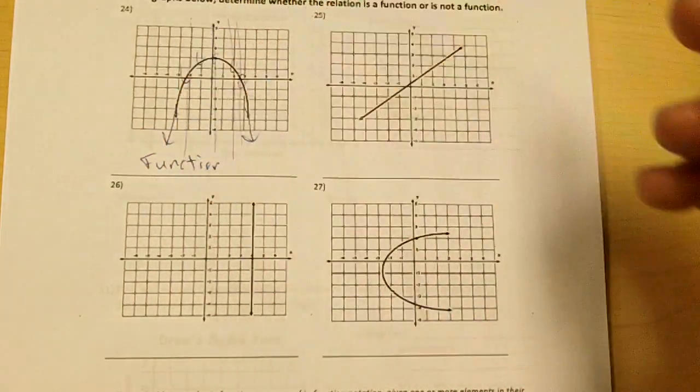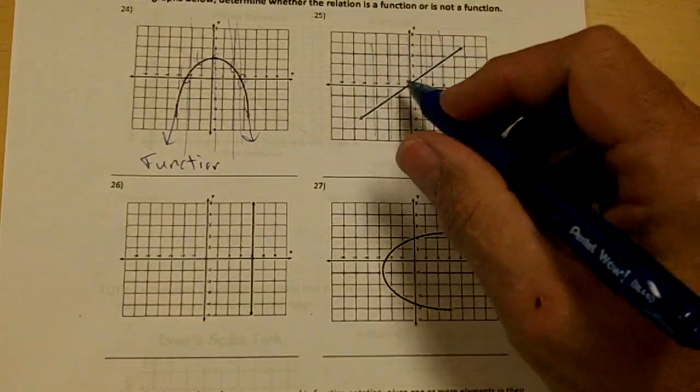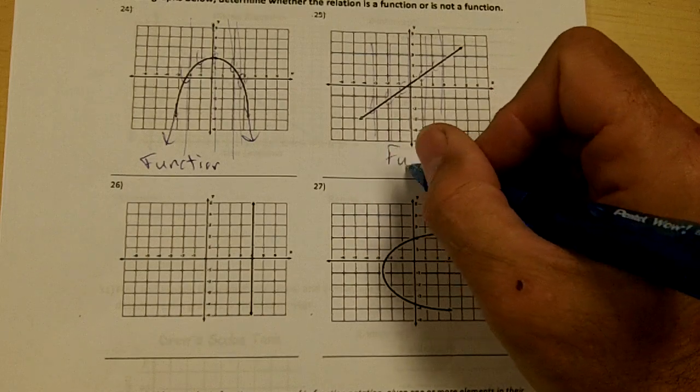If a vertical line crosses a graph twice, the x's repeat, and it's not a function. Right here, every vertical line only crosses the graph once, so it's a function.